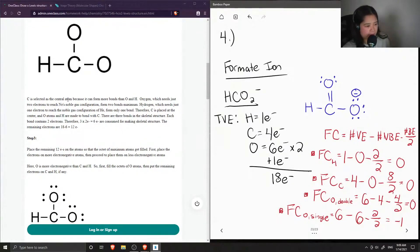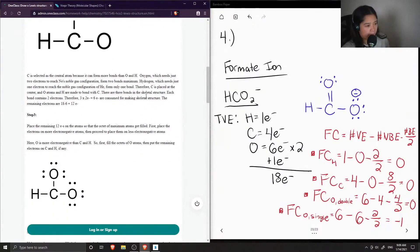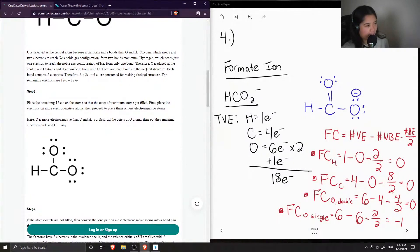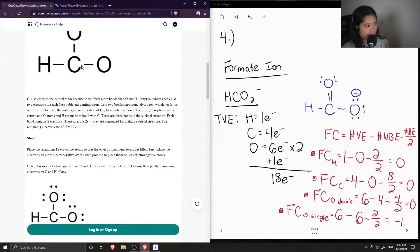So oxygen, which needs just two electrons to reach a neon's noble gas configuration, forms two bonds maximum. And hydrogen, which just needs one to reach the noble gas configuration of helium, forms only one bond. Therefore, carbon is placed at the center. Oxygen atoms and hydrogen are made to bond with carbon. And there are three bonds in the skeletal structure.